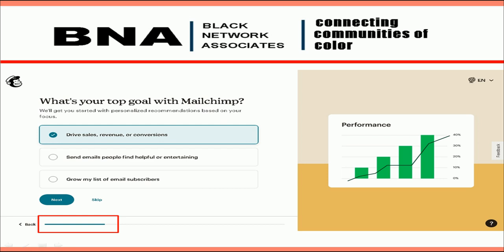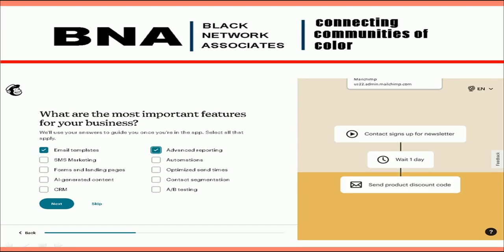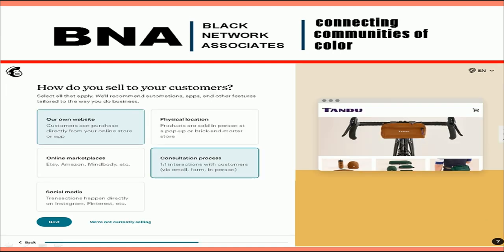You will also notice at the bottom of the page a progress meter, which is an indication of how many more pages need to be completed before your account can be activated. Next, MailChimp wants to know what features you require most — select Email Templates and Advanced Reporting, then click Next. MailChimp then wants to know how you currently sell to your customers; choose Our Own Website and Consultation Process, then click Next.